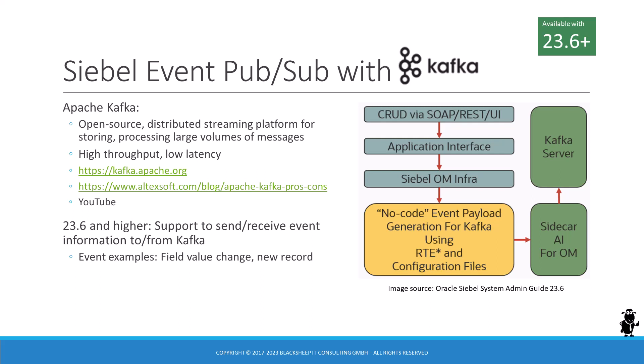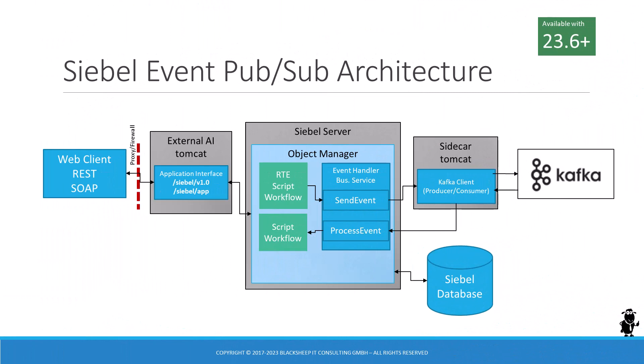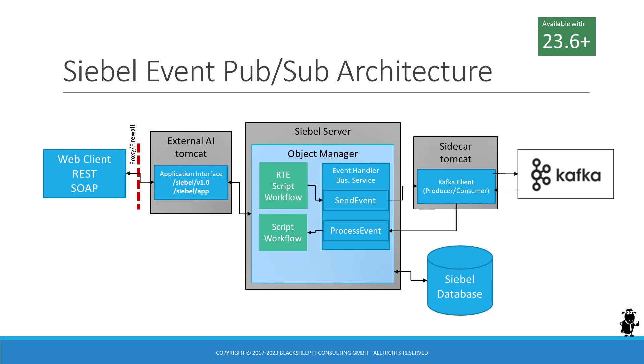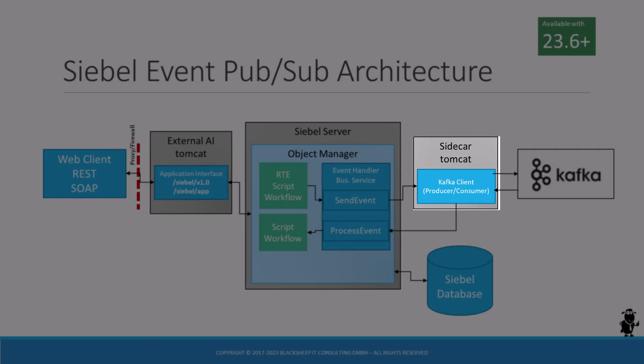With Siebel CRM 23.6 and higher, Oracle provides a framework to send and receive messages to and from Apache Kafka. The central Siebel-side object in this implementation is a business service simply dubbed Event Handler. Developers can use this business service or copies of it to send messages to Kafka topics, for example from a runtime event action or a custom script. The business service class also allows developers to implement methods to process messages received from a Kafka consumer. The communication with Kafka is implemented by the Java Kafka client library, hosted on a Java application container — in the case of Siebel CRM, that's Apache Tomcat, which powers the external AI and internal SES containers in a Siebel environment.